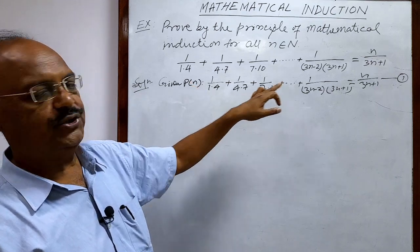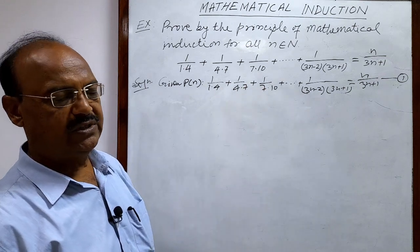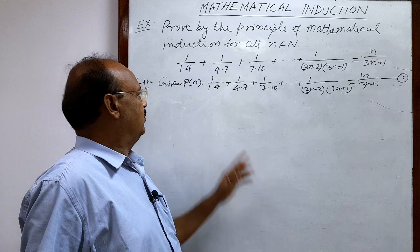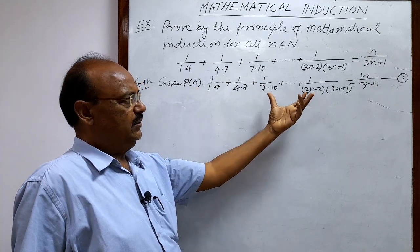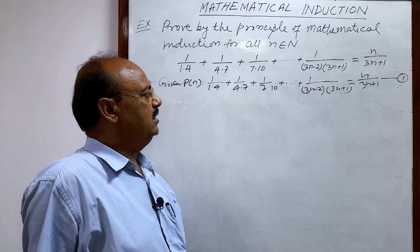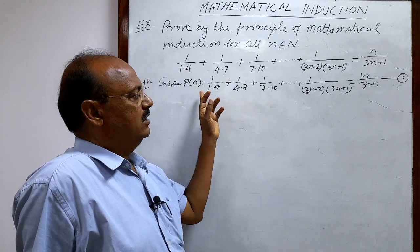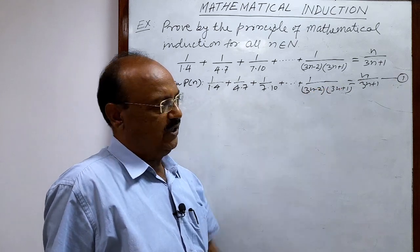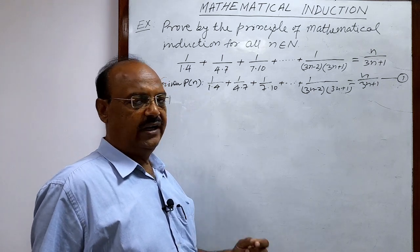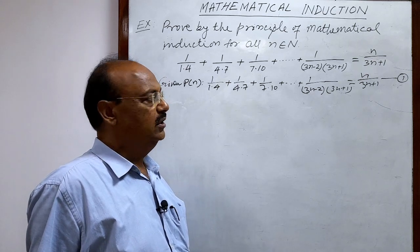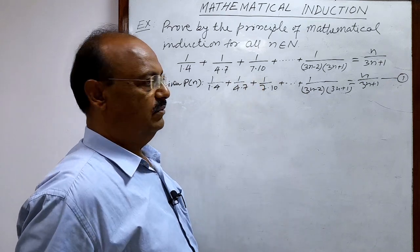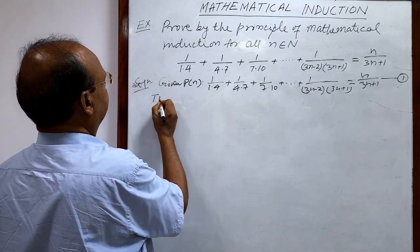After putting n=1 in relation number 1, we will show that LHS equals RHS, which means P(1) is true. The second step is to assume that P(r) is true — whenever n=r in this statement we will assume the statement is true. The third and last step is to prove that P(r+1) is true, putting n=r+1. After all three steps we write that by the principle of mathematical induction, P(n) is true for all n.